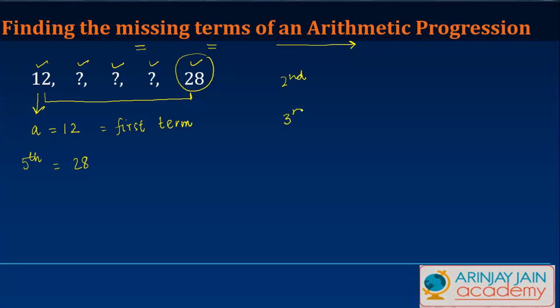Now we know the value of an nth term of an AP is equal to a plus n minus one times the difference, where a is the first term. So in order to find out the second, third, and fourth value, we need to know the first term which in our case is 12.